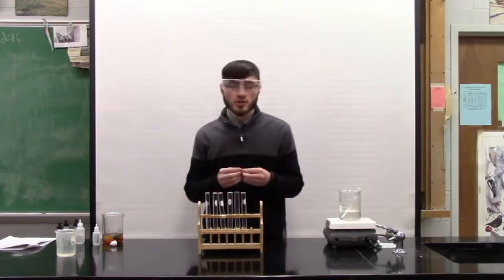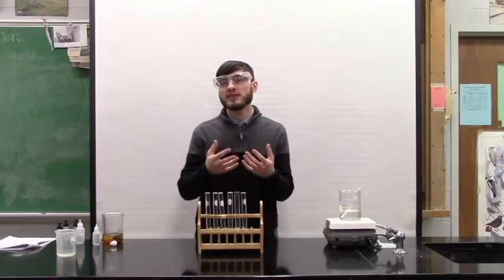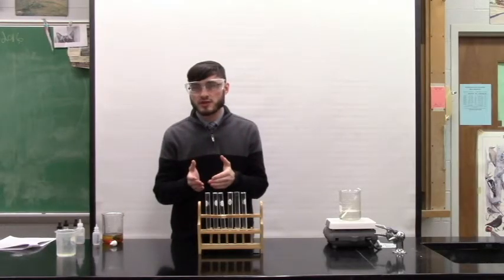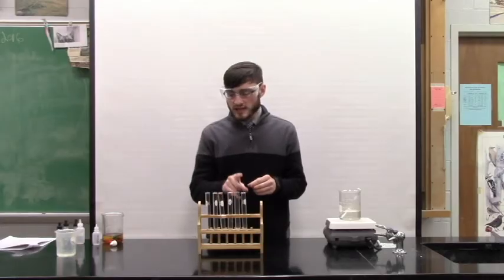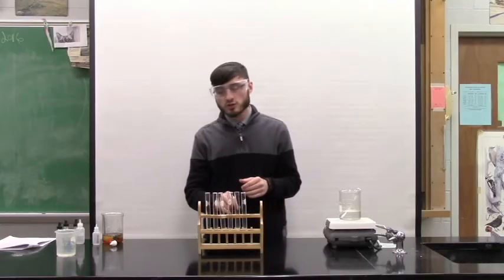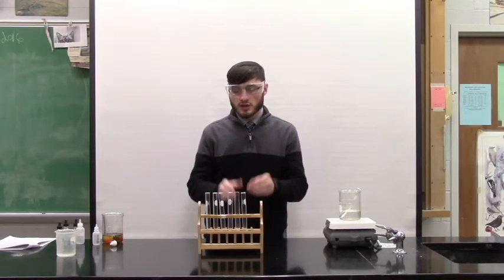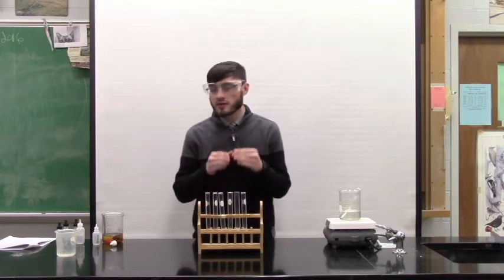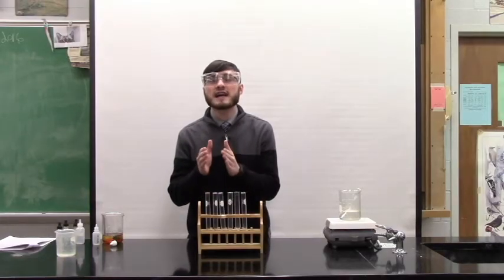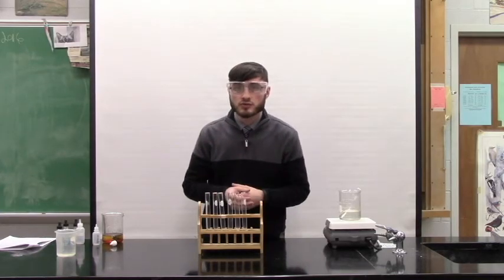Now onto part two. Part two has you set up six test tubes. And ultimately what you're going to do is see what the indicator looks like when there is that molecule present that it's an indicator for and when there isn't that molecule present. So what we do is we add water, distilled water, starch and glucose. Then to another set of three, distilled water, starch and glucose. The first set of three we're going to test with the blue glucose indicator solution, our Benedict solution. The second set we're going to test with our iodine or our starch indicator solution.